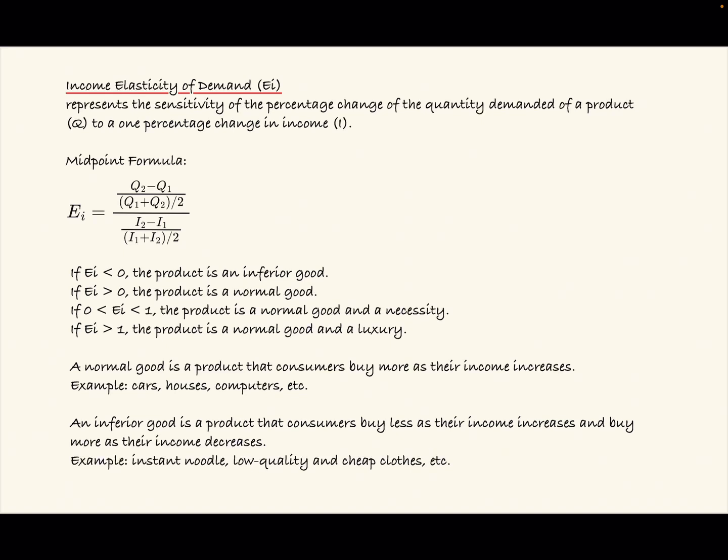A normal good is a product that consumers buy more as their income increases. For example, cars, houses, computers, etc.